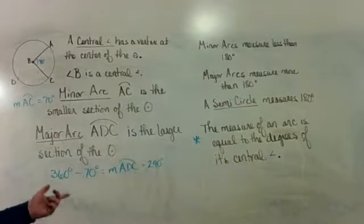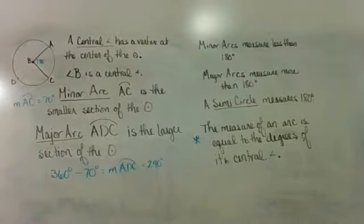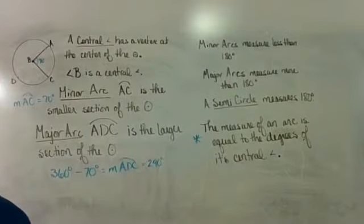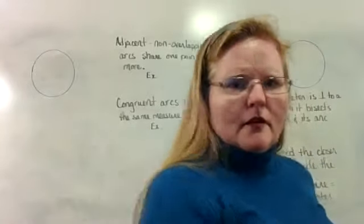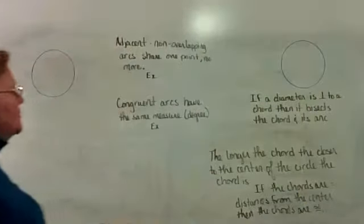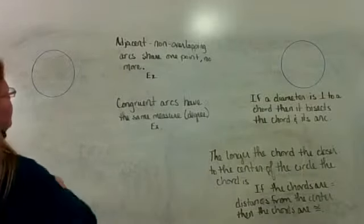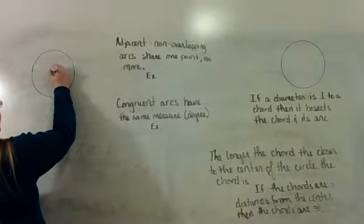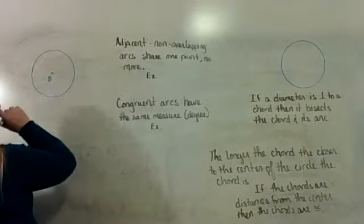We have something called arc addition — you can add up arcs to get certain values. Adjacent non-overlapping arcs share one point and no more. Going back to circle B, if I have an arc up here...